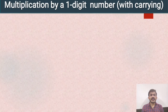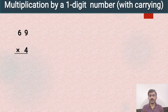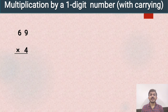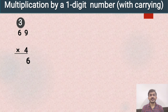Our first topic is multiplication by a one digit number with carrying. Let's understand this with one example: 69 multiplied by 4. Now you know that 9 is at the ones place and 6 is at the tens place. According to the rules of multiplication, first of all we have to multiply any digit with the ones place, then tens, then hundreds and so on. In this example we will multiply 4 with 9. So 4 nines are 36. We will write 6 at the ones place.